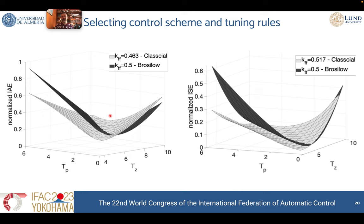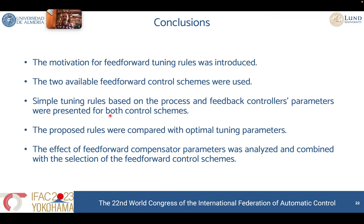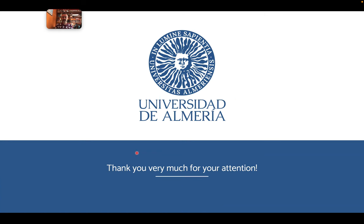As a conclusion, we presented a motivation about the need for tuning rules to improve responses using feedforward compensators and feedforward control schemes. We presented different control schemes and different rules that can be tuned using the process parameters, and compared all of them against optimal results. We also analyzed the effect of the poles and the zero, showing that the ratio between them is really important to select not only the rule but also the control scheme. Thank you very much — I really hope that this talk has been useful for you.